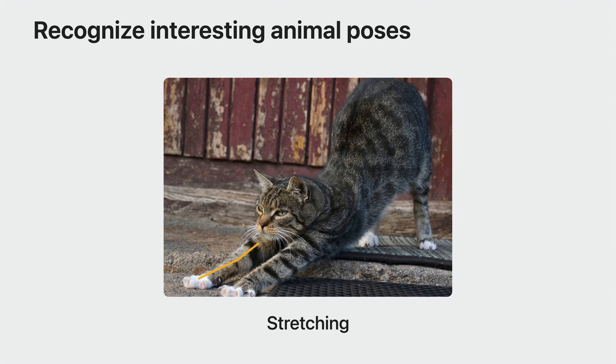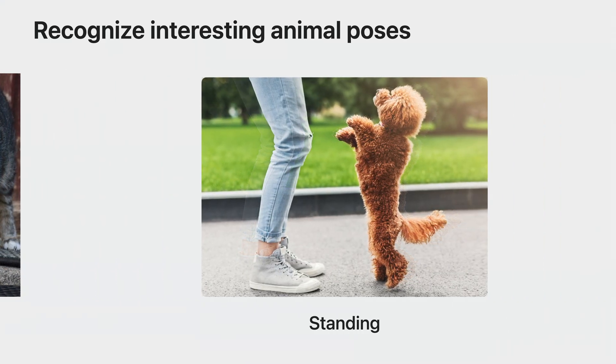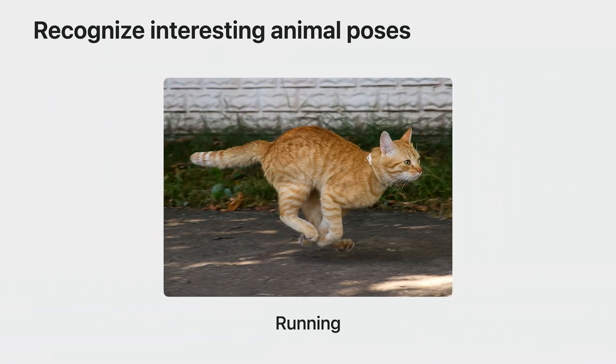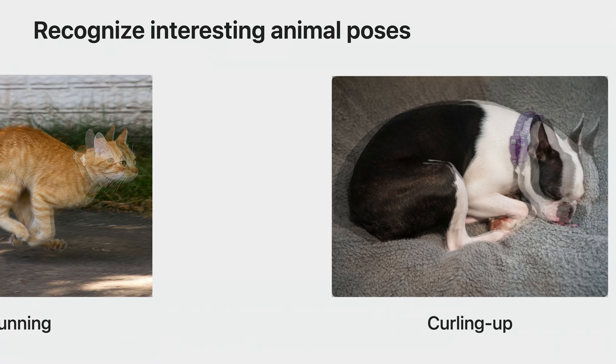Let's go through a few examples of what can be done with animal pose. Using the new animal pose API with still images, you can develop your own analysis on the joints to recognize interesting poses of your animal, such as stretching after waking up, standing and begging for a treat, running away from a dog, or curling up to take a nap.